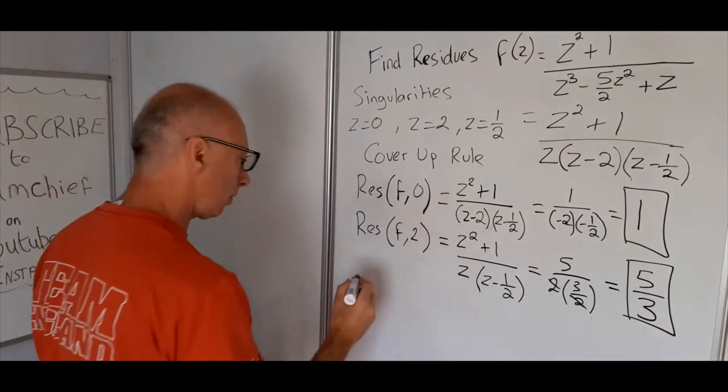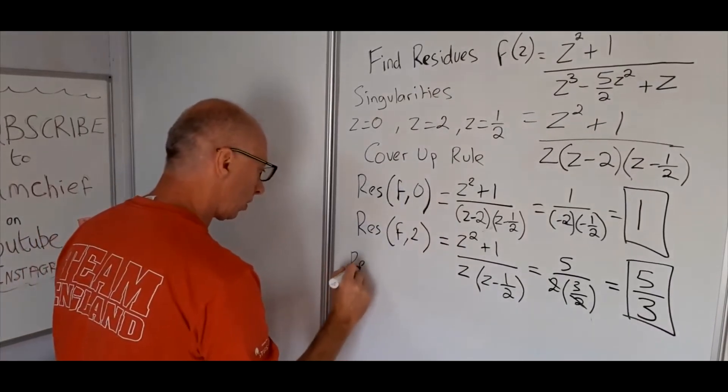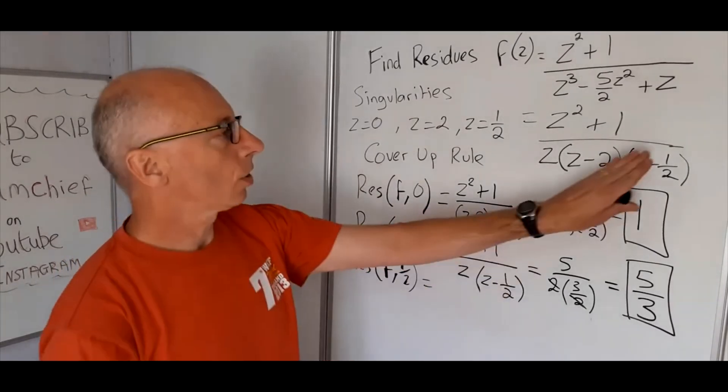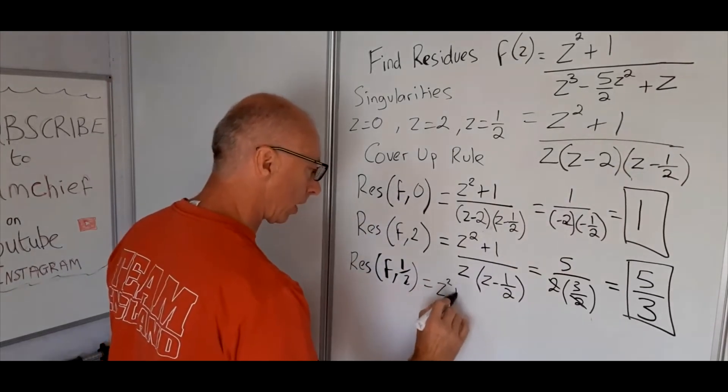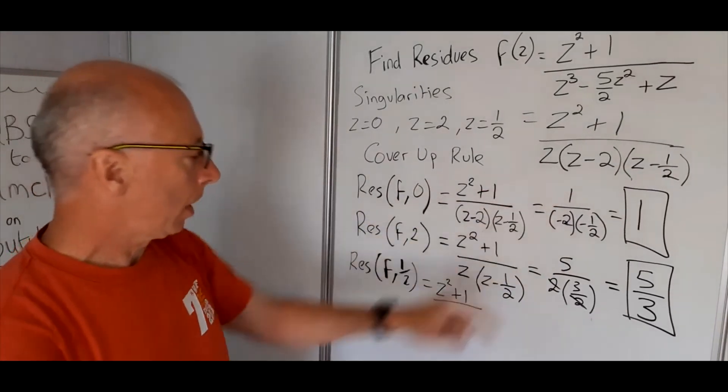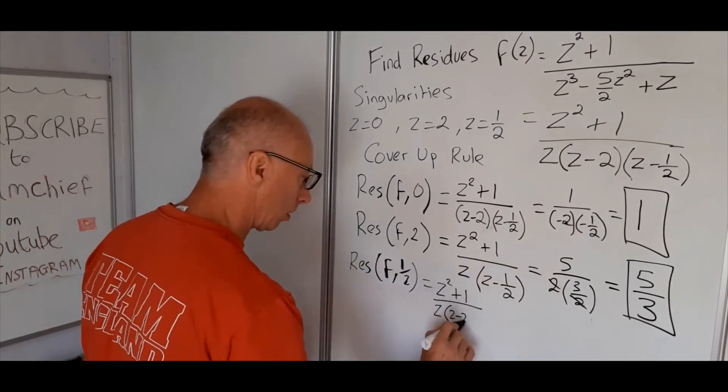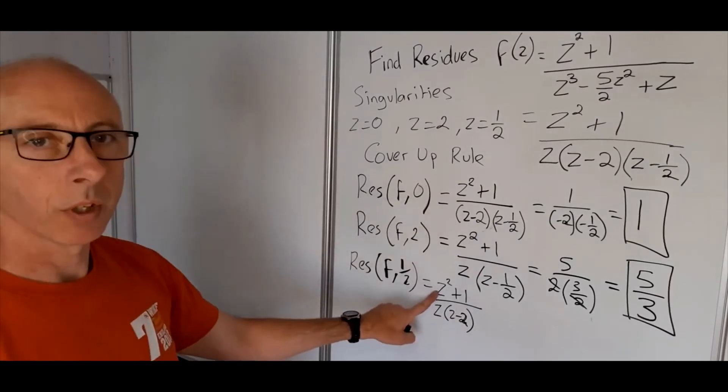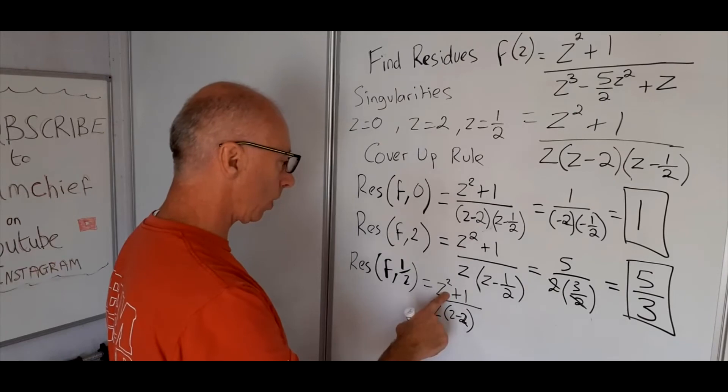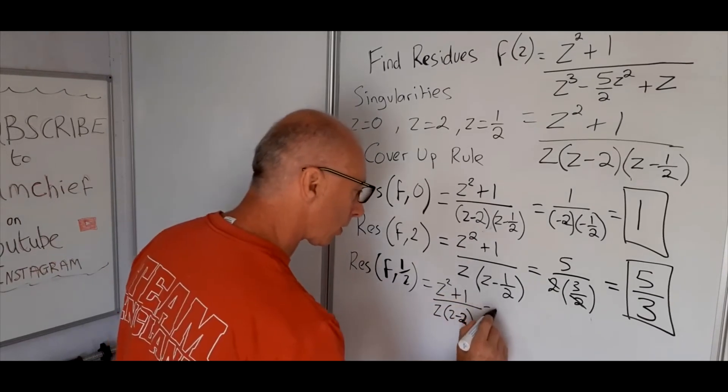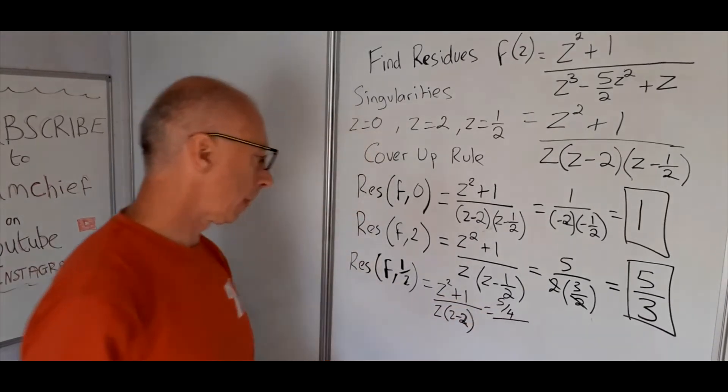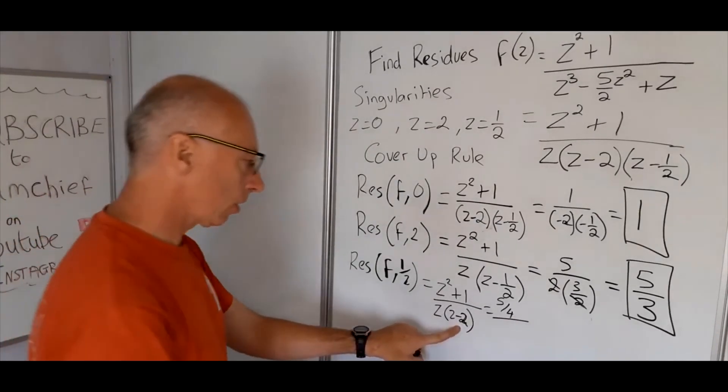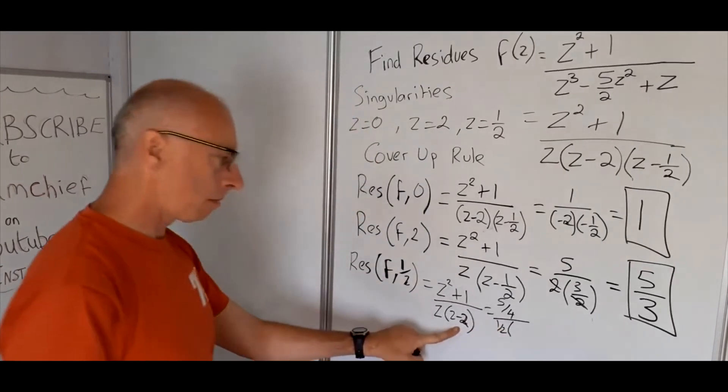Now the last one at half. So the residue of f at a half. So again just covering this bit up now. We get z squared plus 1, z, z minus 2. Plug in a half for here. So we get a quarter. Half squared is a quarter plus 1. So that's going to give us 5 over 4. Then a half times a half minus 2. That's going to give us 1 half times minus 3 over 2.